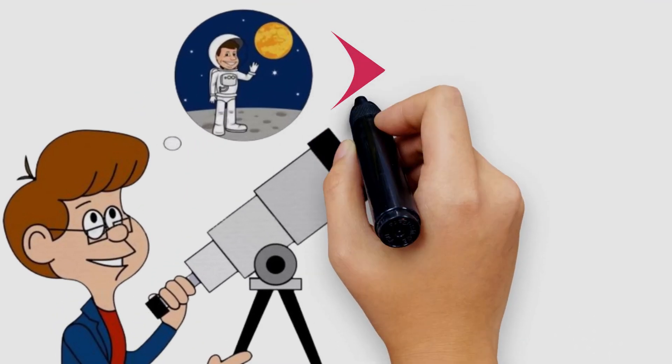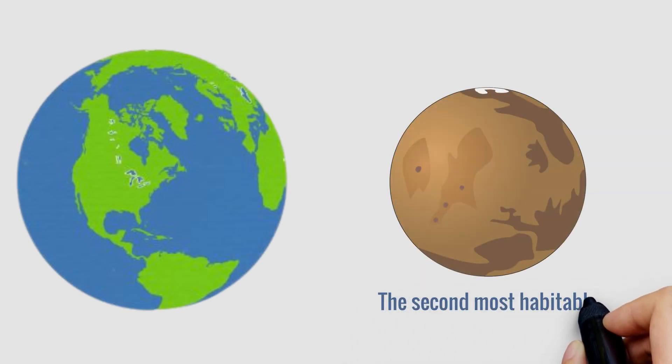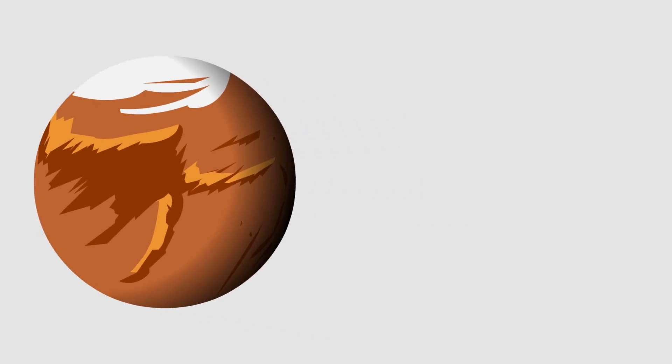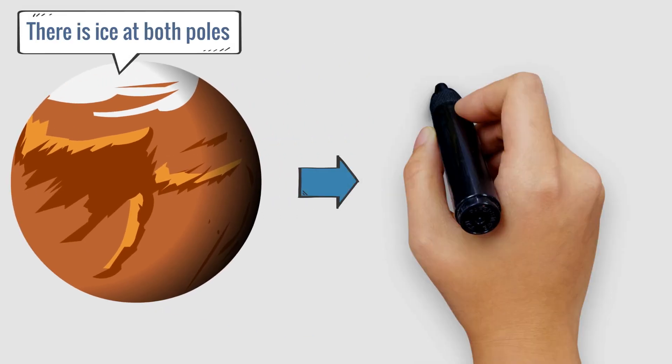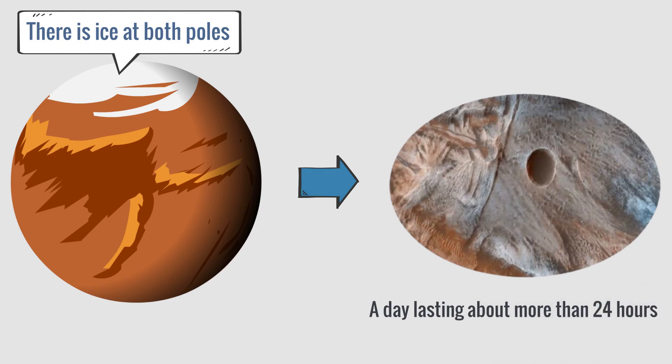Astronomers often refer to Mars as the Earth's twin because of its similarities to Earth. It is the second most habitable planet in the solar system, at least by NASA standards. Like Earth, Mars has ice at both poles with evidence of surface and subsurface water, a day lasting about more than 24 hours, and a tilted axis that causes seasonal variations.